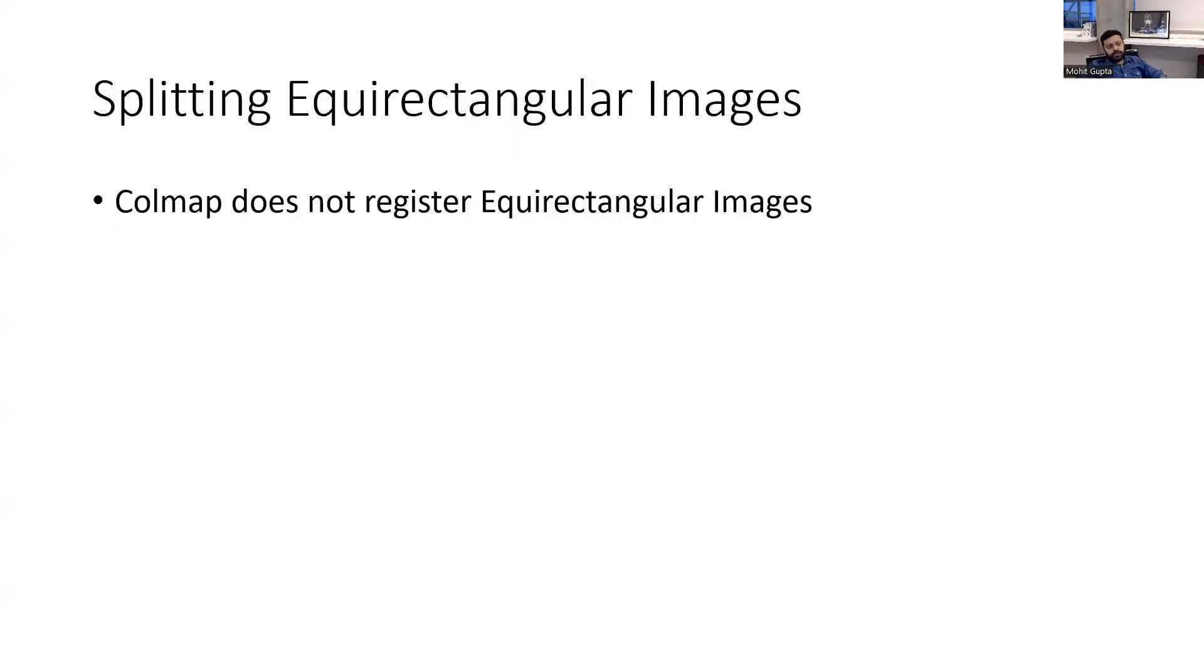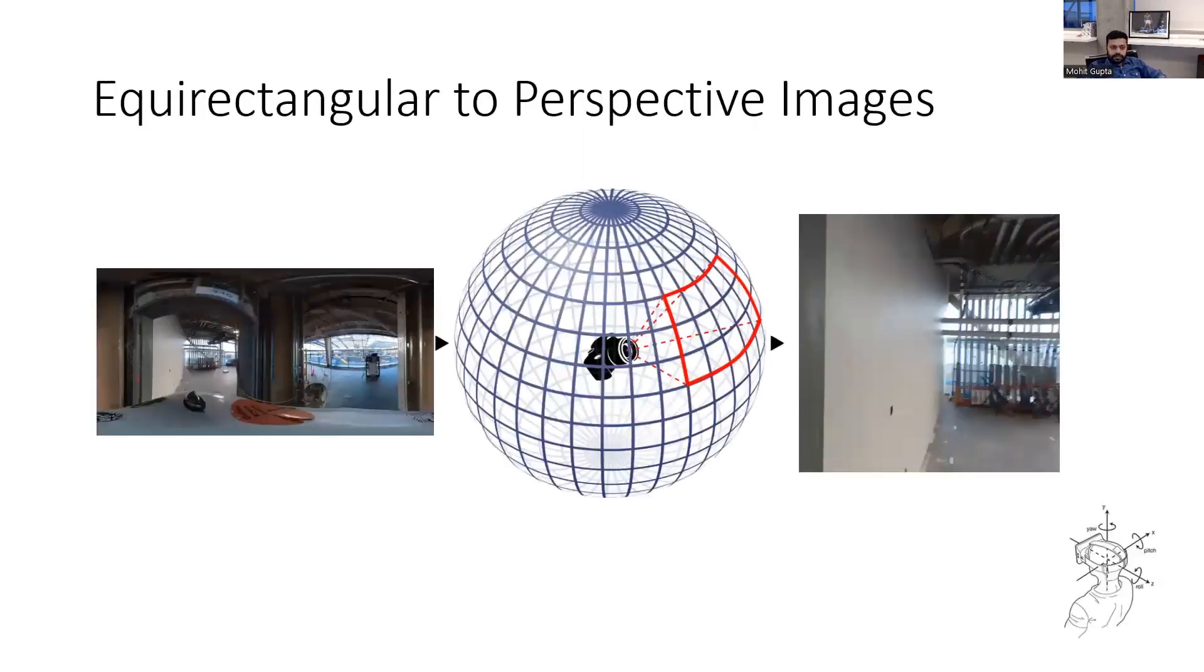As I told you, Colmap does not register equirectangular images as of now, and there are some algorithms on OpenSfM that are being developed which would directly take equirectangular images and could register them, but I really don't know much about it. So for using equirectangular images, what I was doing is I would split this into multiple perspective images. So this 360 view is basically if I wrap this rectangle, this image, equirectangular image, on this sphere, it will cover a whole circle.